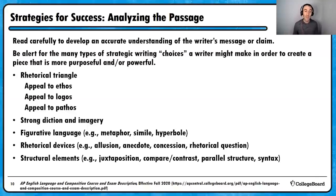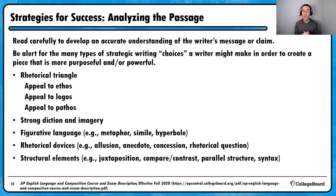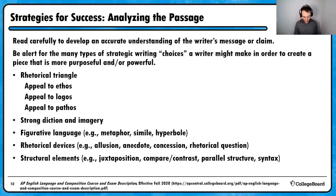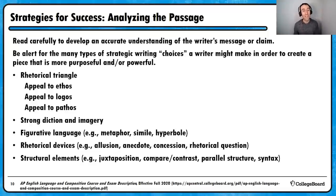One last note before we look at a practice passage: it is not necessarily crucial that we use exact terminology. For instance, if you described an author as putting two things side by side, that's going to carry just about as much weight as calling it juxtaposition. Whether a student knows something is an allusion or merely a reference to a famous book ultimately does not make a big impact in the overall score. As long as we accurately describe the choices and explain not only what those choices look like in the text but how they impact the text and help the author achieve their purpose, we are doing the task of rhetorical analysis. If you see something but can't remember the term, do your best to describe it and the reader will try their best to reward you for that.